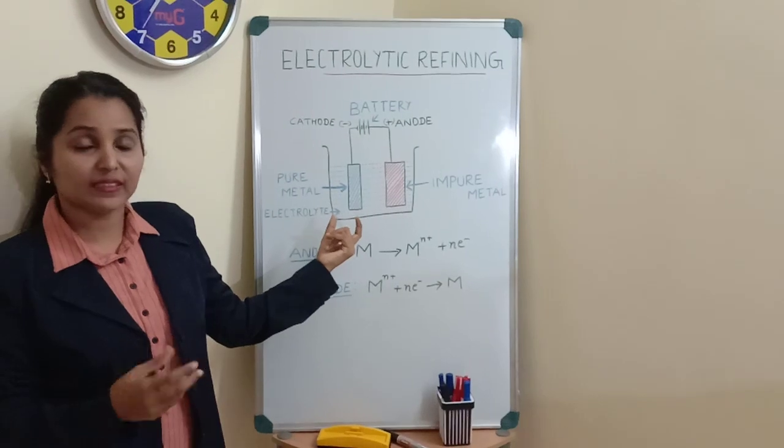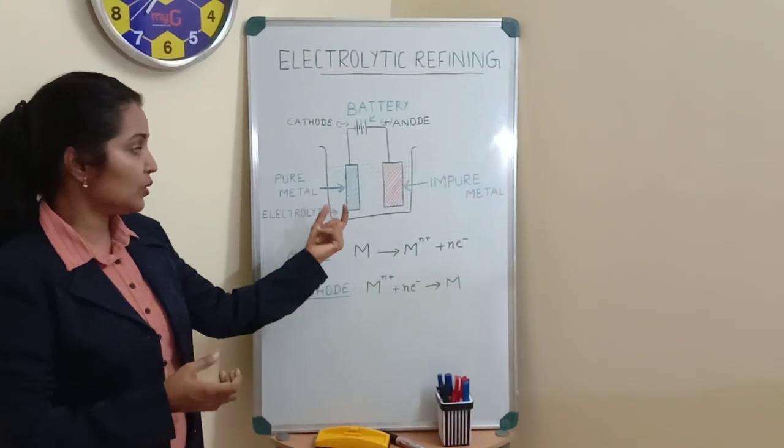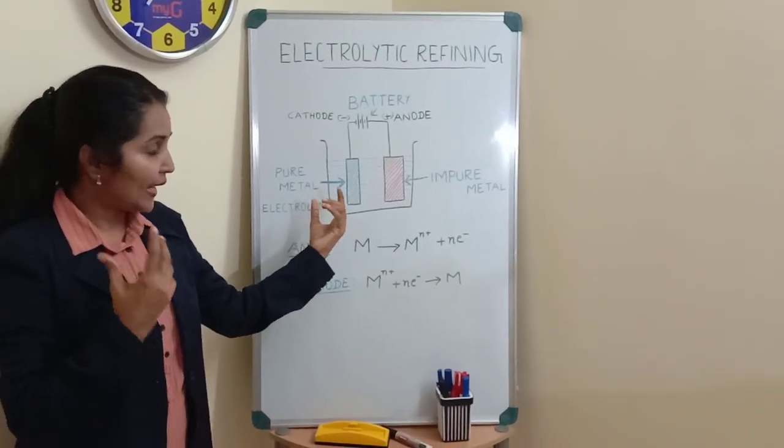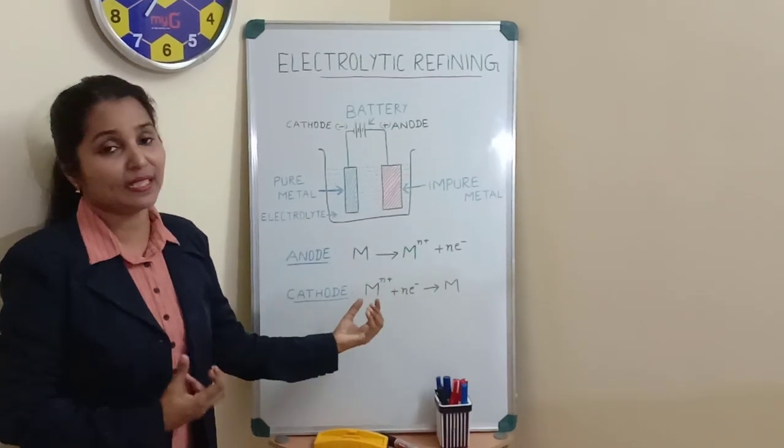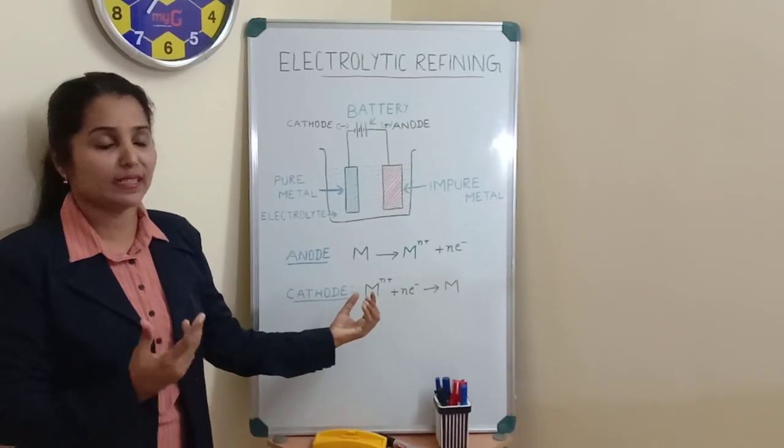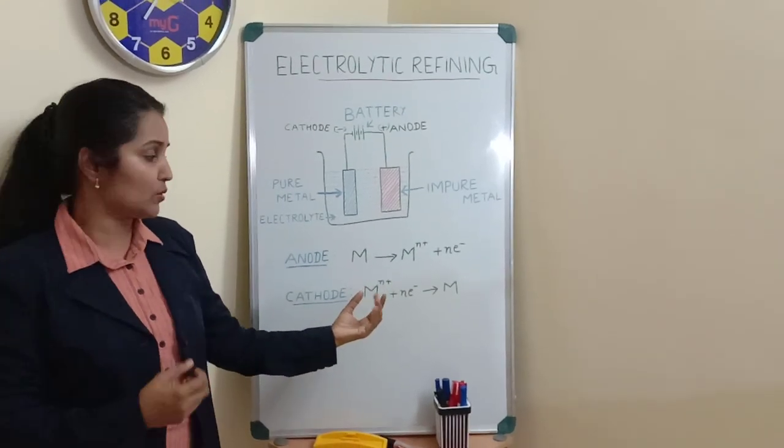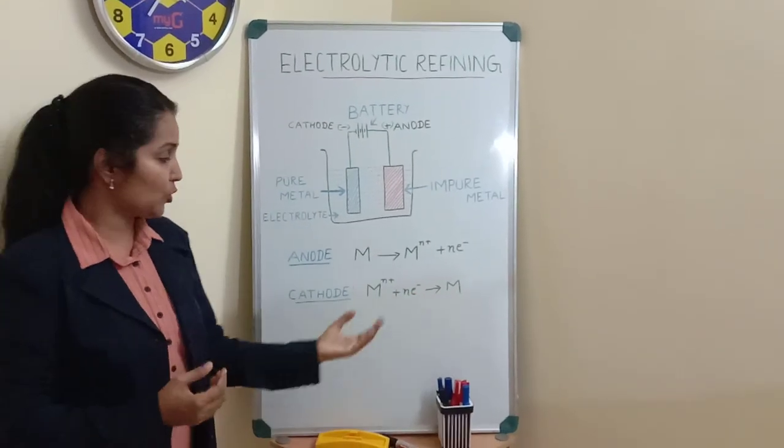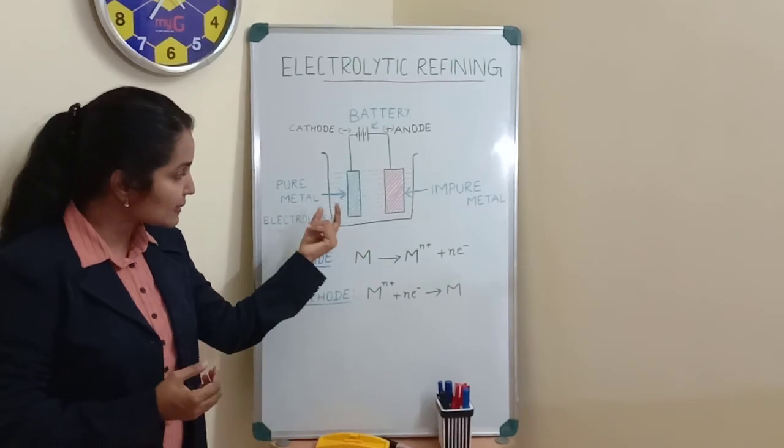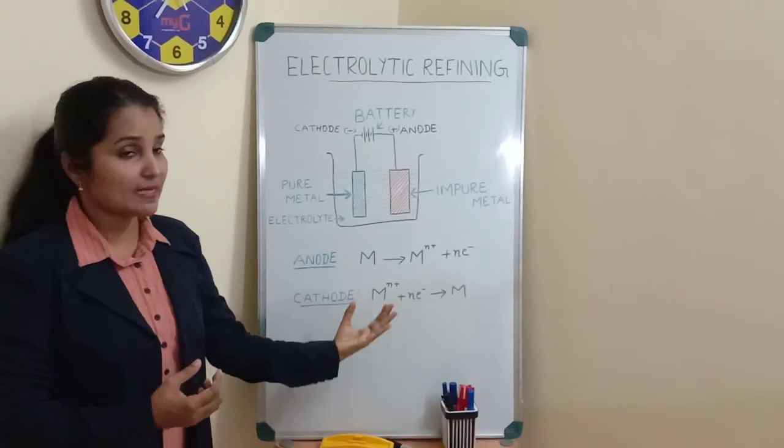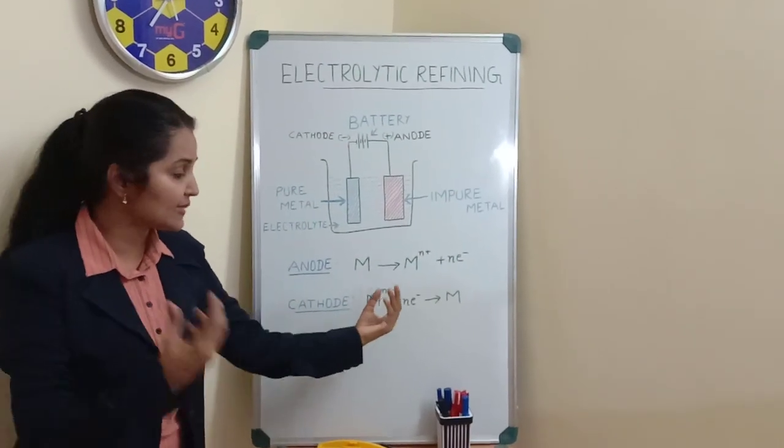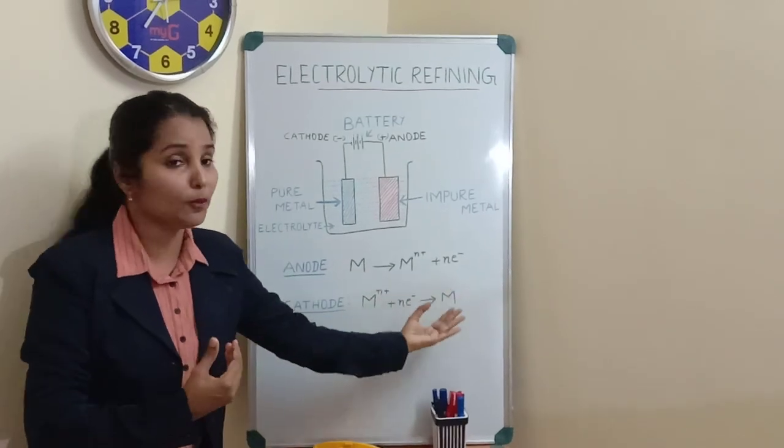At cathode, reduction happens. The ion with positive charges accepts electrons. During reduction, in terms of electron transfer, the ion accepts electrons to become the metal. At the cathode, the charged ion accepts electrons to form metal.